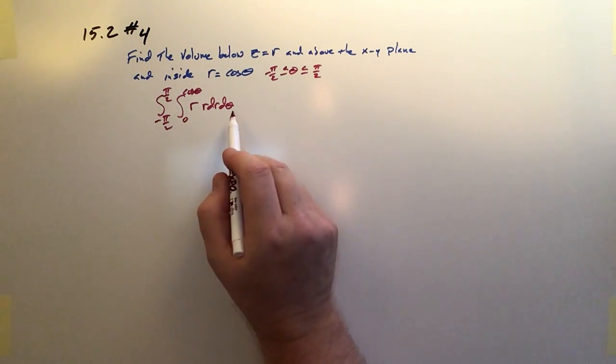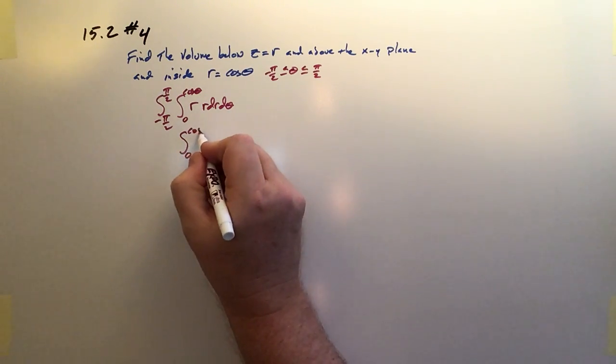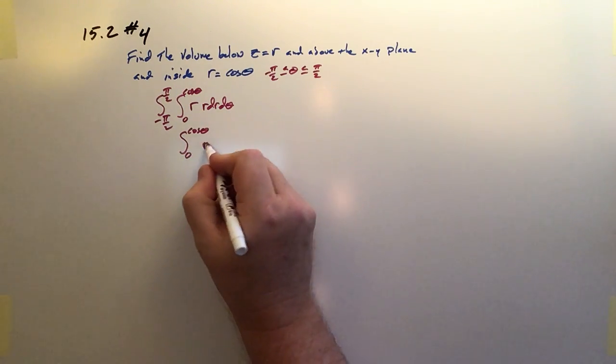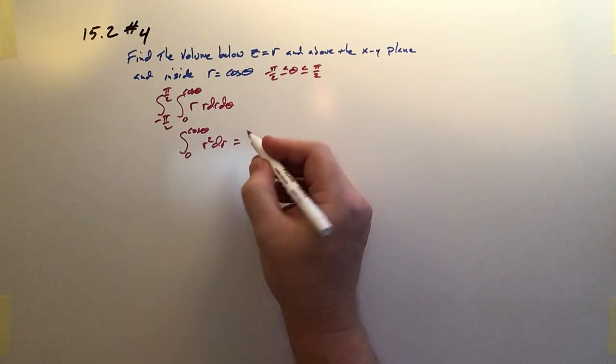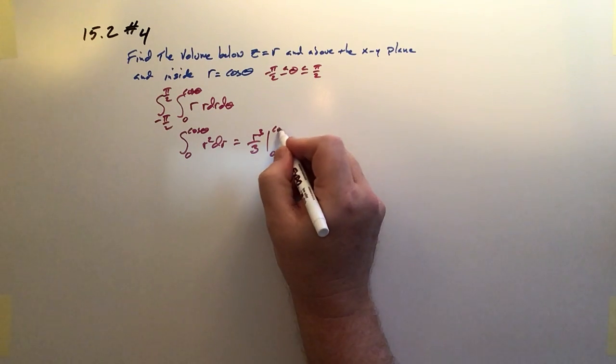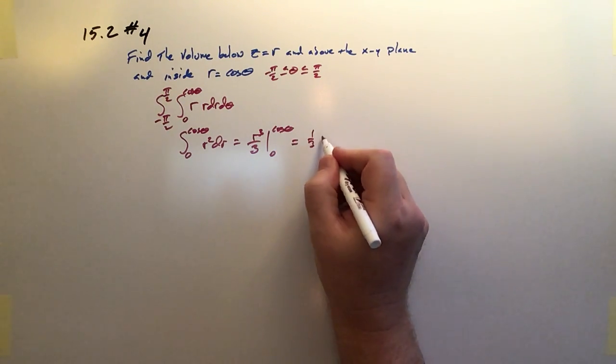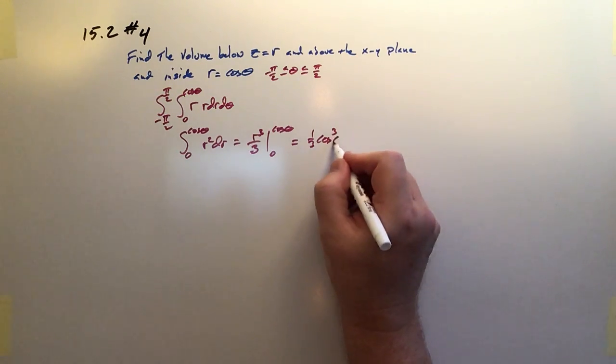Okay, so let's go ahead and do the double integral. I'm first going to do the inner one. That's pretty easy. Zero to cosine of theta of r squared dr, and that's going to be r cubed over 3 between zero and cosine theta. So that's just one third cosine cubed theta.